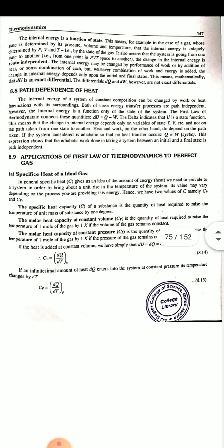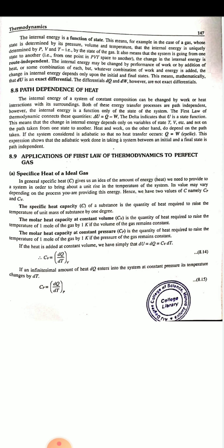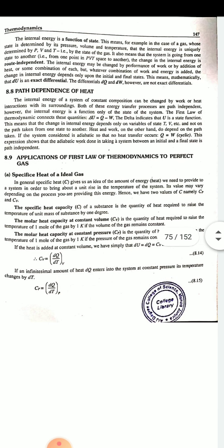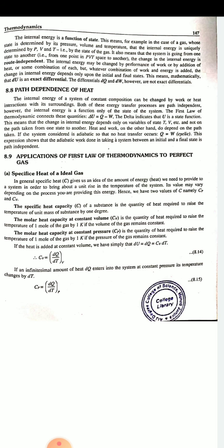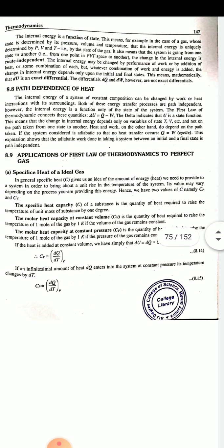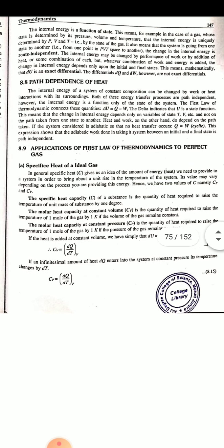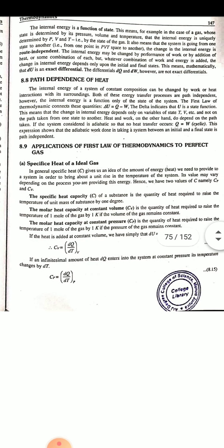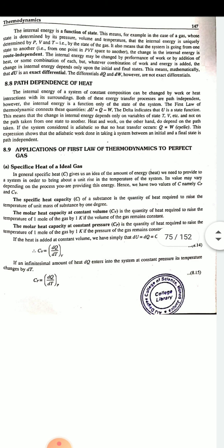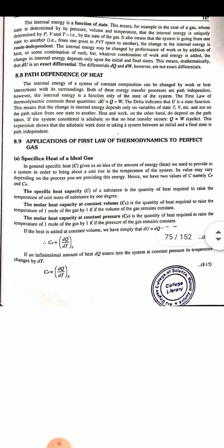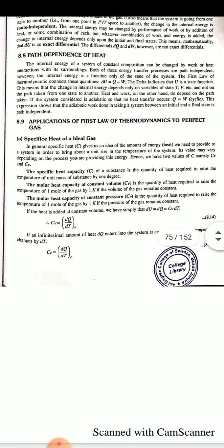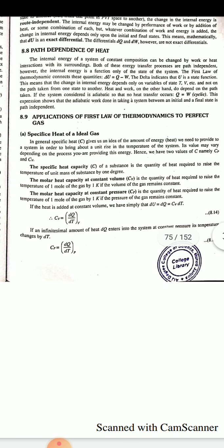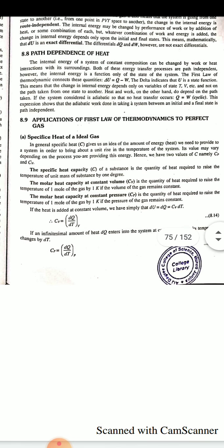When we discuss specific heat of an ideal gas — specific heat gives us an idea about the amount of heat we need to provide to a system in order to bring about a unit rise in temperature. Its value may vary depending on the process by which you are providing this energy. Hence we have two values: C_p and C_v. The specific heat capacity is the quantity of heat required to raise the temperature of a unit mass of a substance by one degree — that may come for the MCQ.